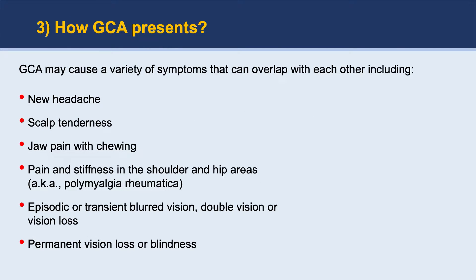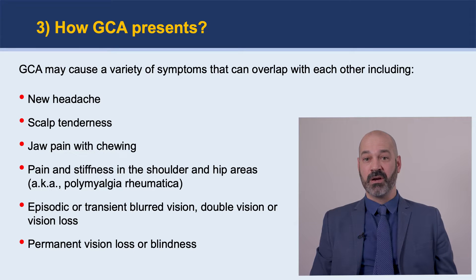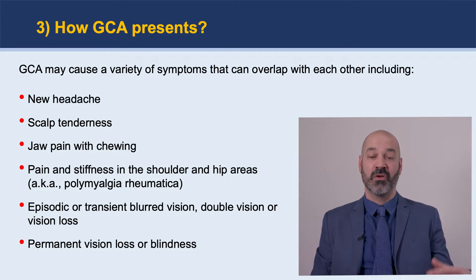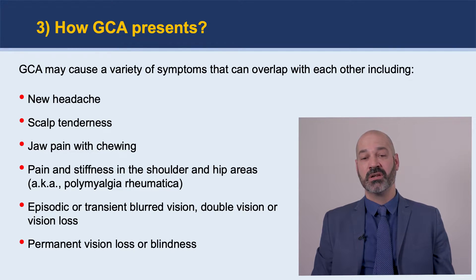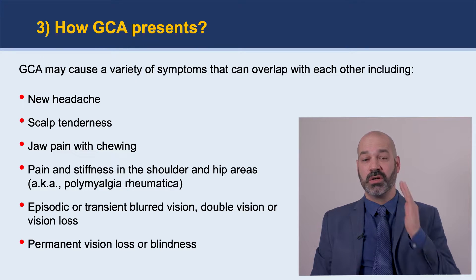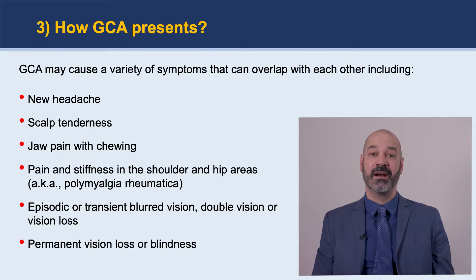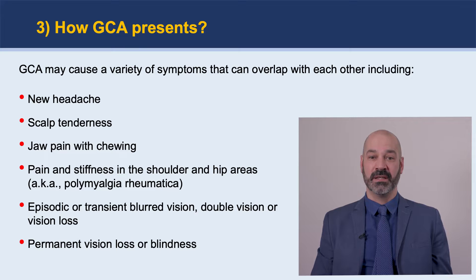How does GCA present? GCA can cause a variety of symptoms that may overlap with each other. Patients may present with a new type of headache — classically in the temporal area, but can involve any other area of the head. The important thing is that these headaches are new; the patient didn't have them before. Some patients may report pain when they chew, pain in the jaw area — we call that jaw claudication. Patients can also have tenderness in the scalp, sometimes noticeable when wearing glasses or combing their hair. It's also common to see pain and stiffness in the shoulder or hip area, which we call PMR, or polymyalgia rheumatica.